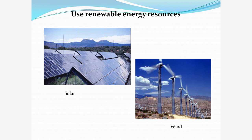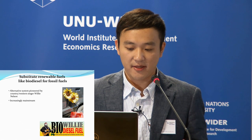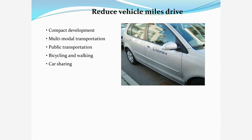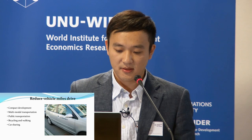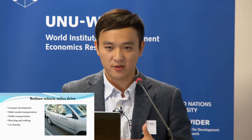We use renewable energy resources such as solar and wind, and we can use substitutes like biodiesel for fossil fuels. It is also very important that we reduce vehicle miles traveled when driving in the city. There are different methods to achieve this goal, such as compact development and the TOD transportation system.